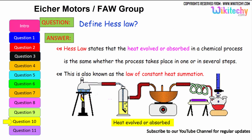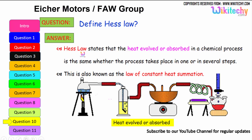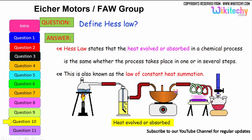Define Hess's law. This is one of the very important questions in the case of generating heat between an object and its emissions. Hess's law states that the heat evolved or absorbed in a chemical process is the same whether the process takes place in one or in several steps. This is also known as the law of constant heat summation.